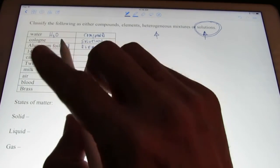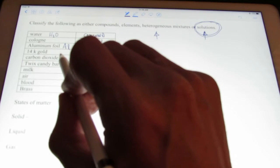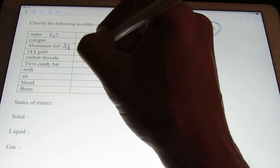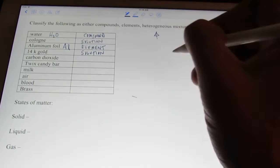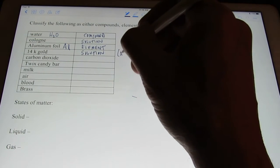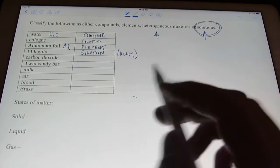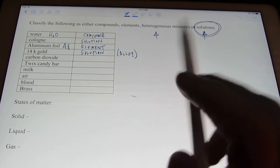So, 14 karat gold, did you hear what I said? A homogeneous mixture. What's another term for homogeneous mixture? That's right. You would classify that as a solution. This is called an alloy. It's a homogeneous mixture of two or more different metals.